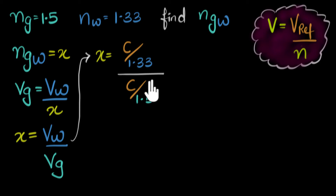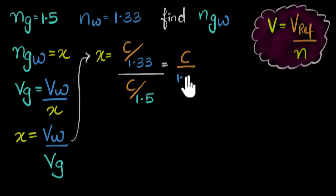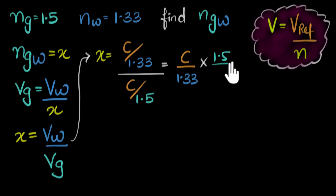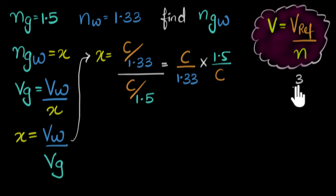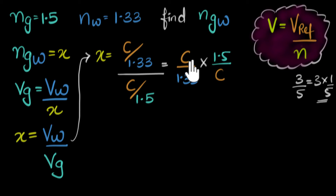We're pretty much done with the physics. All we have to do now is solve this fraction. Since there's a fraction over a fraction, I'll write the numerator as it is — c divided by 1.33 — multiplied by the reciprocal of the denominator, which is 1.5 over c. Notice that C cancels out, so our answer is 1.5 divided by 1.33.